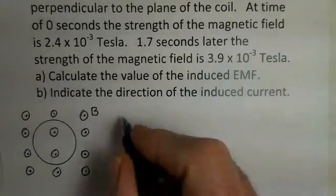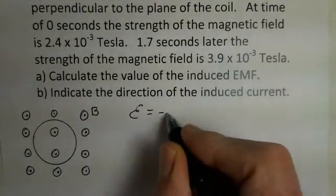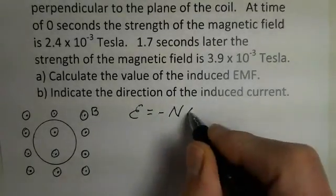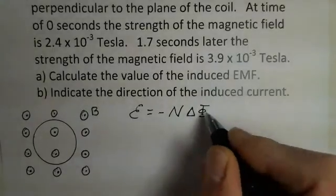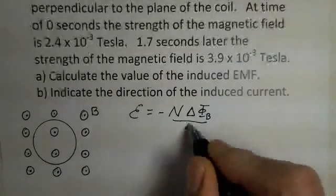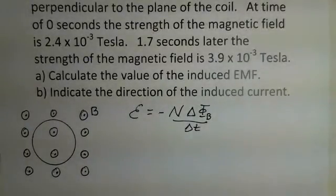We obtain that EMF number as minus N, the number of turns in the coil, times the rate of change of the magnetic flux. How much did the magnetic flux change in a given time interval? That's our Faraday's Law. We can find the induced EMF by multiplying the number of turns of the coil times the change of the magnetic flux divided by the length of time for that change to occur.